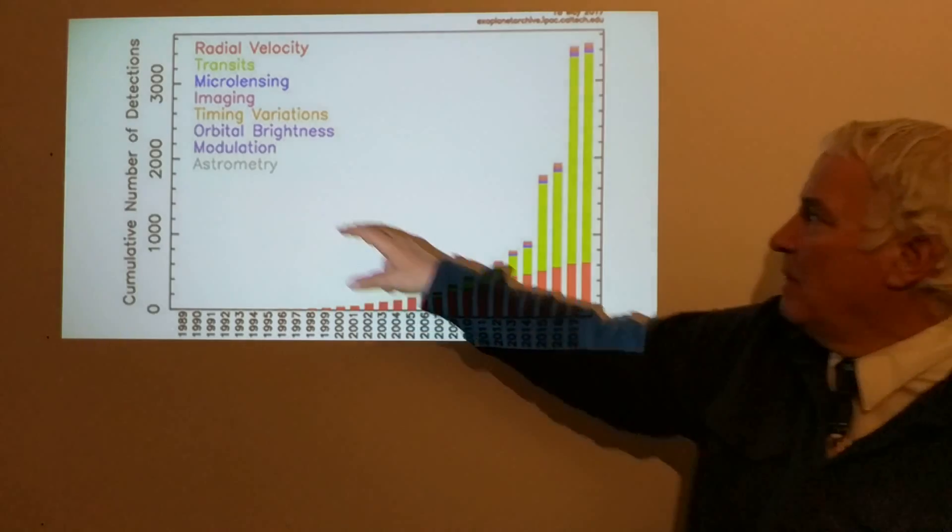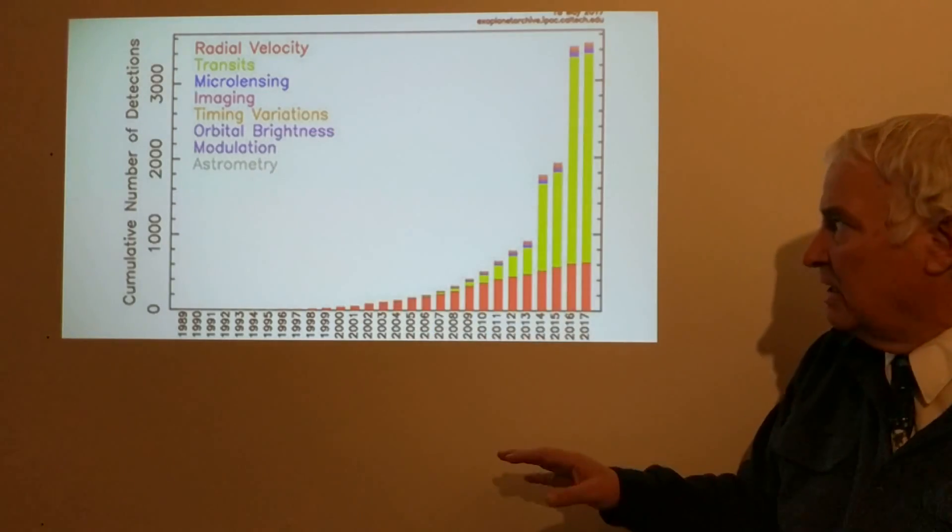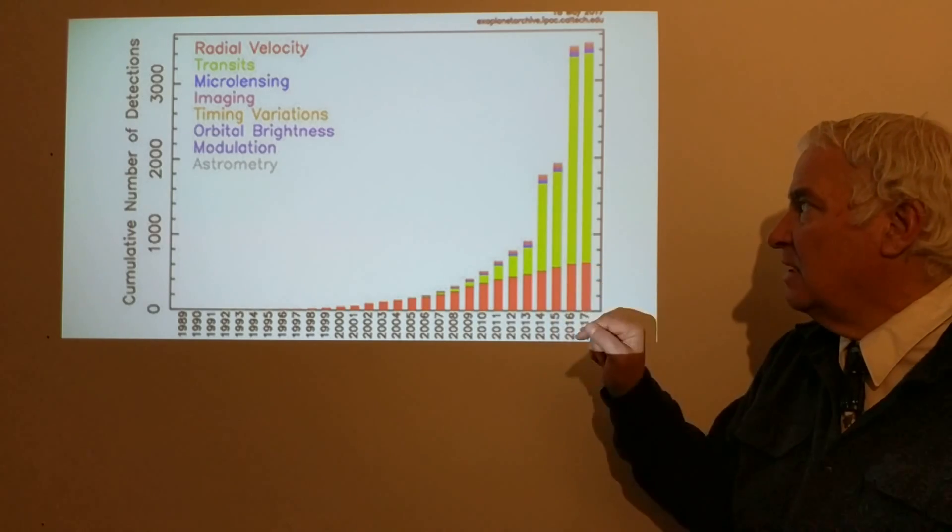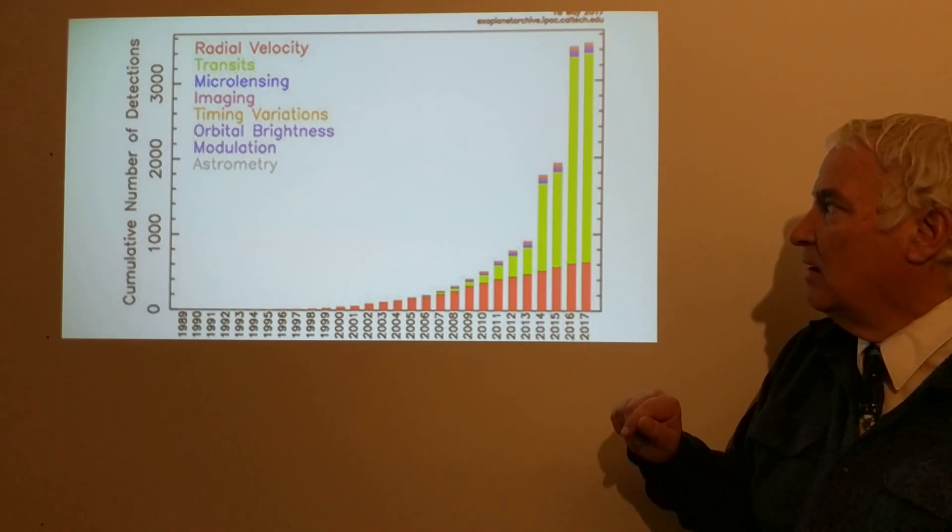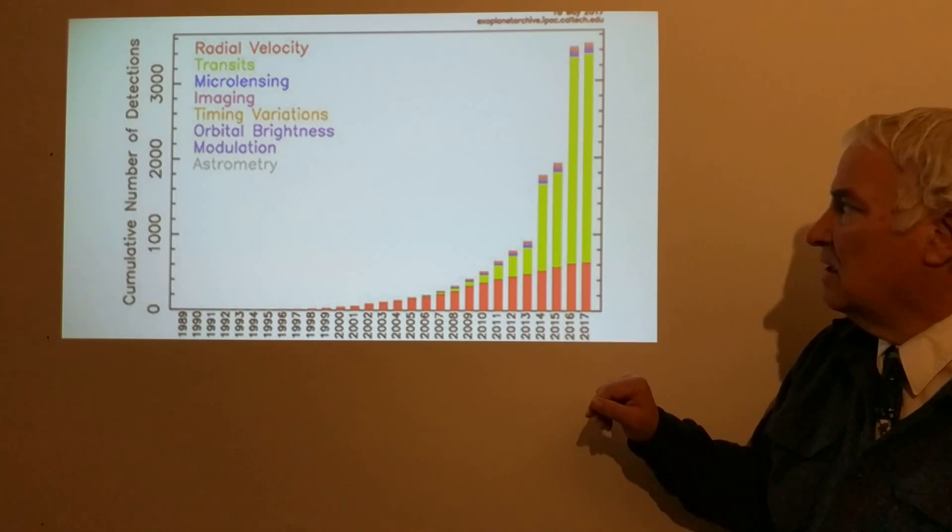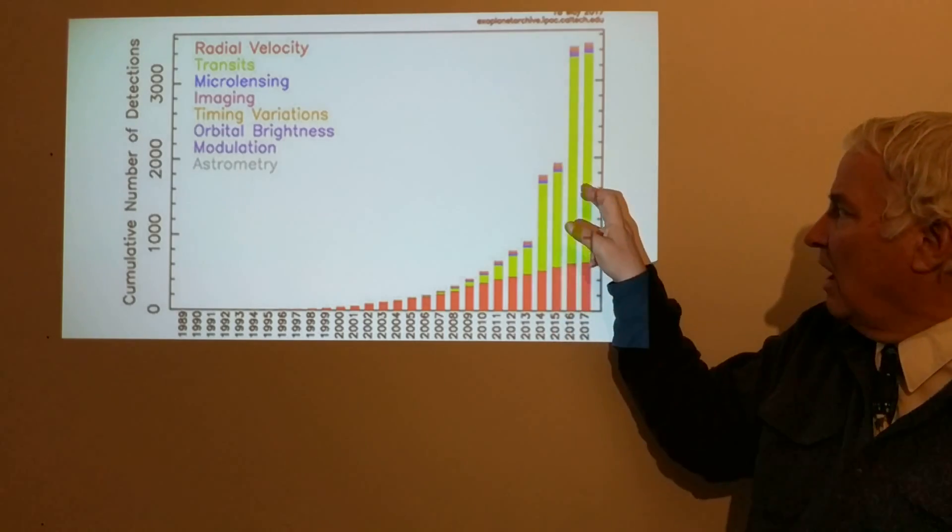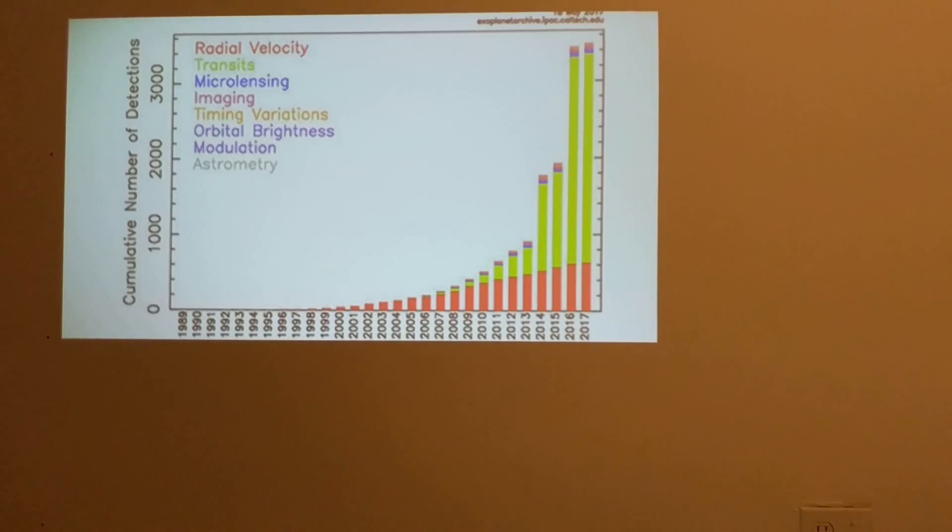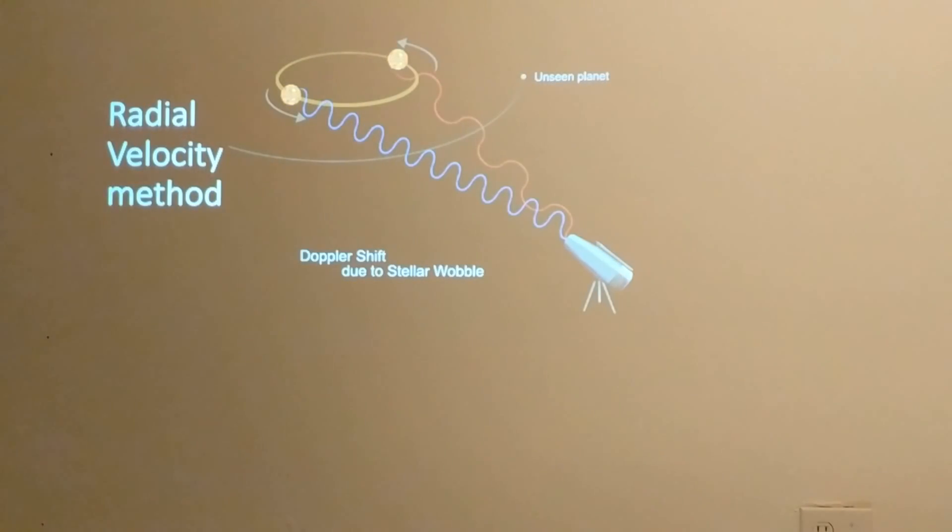I will talk about those two methods. The other methods—microlensing, direct imaging, which is looking at a planet directly and seeing it orbit a star, and other kinds of techniques—account for a very small number of detections, and for that reason and reason of time, I will not include those.